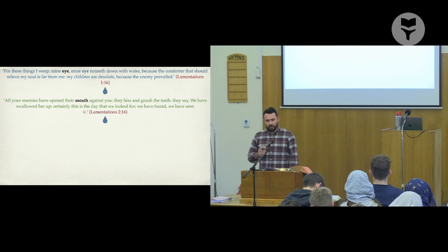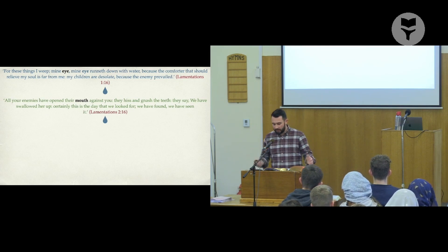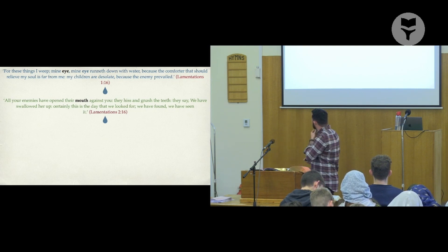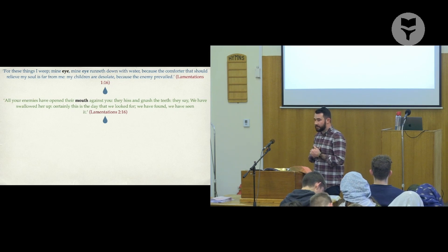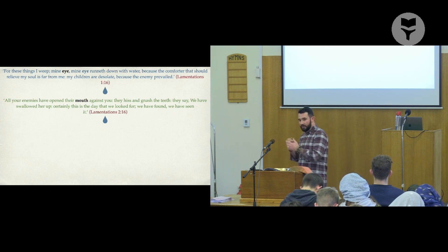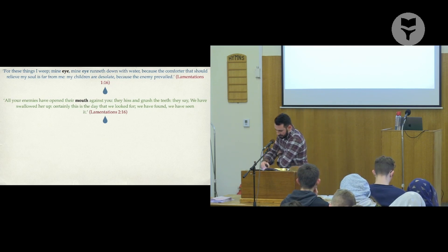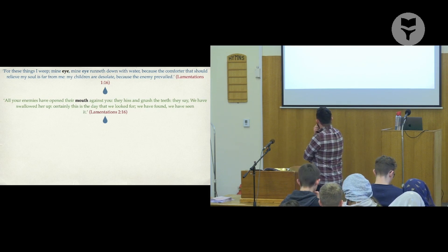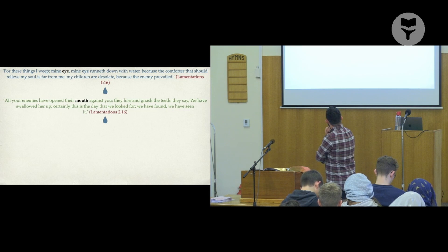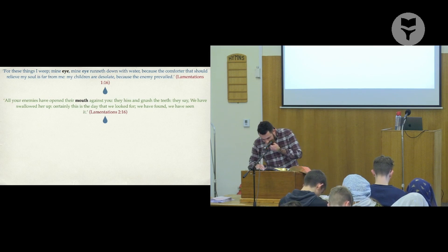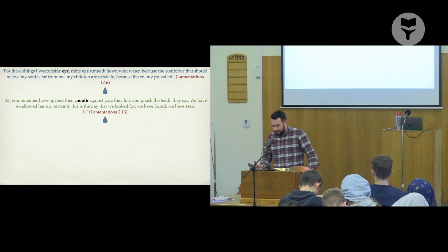They don't even realize their suffering was because of the sins they had done — they're weeping because of the pity they're going through. It's not following the spiritual pattern. In chapter two, where the first letter swap happens, the Pe arrives — the mouth — and look what it says in Lamentations 2:16: 'All your enemies have opened their mouths against you; they hiss, they gnash their teeth; they say, we have swallowed up Jerusalem.'